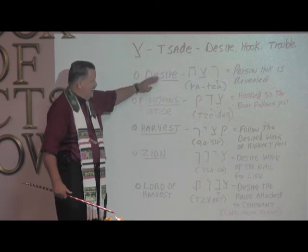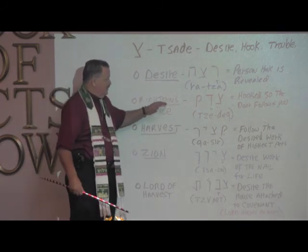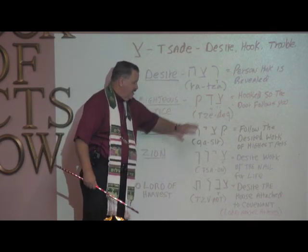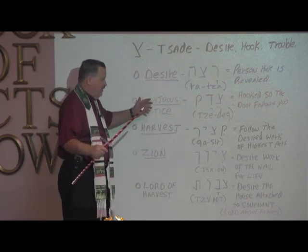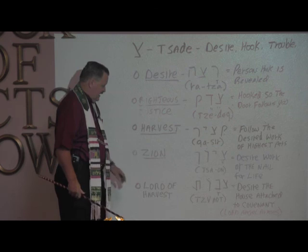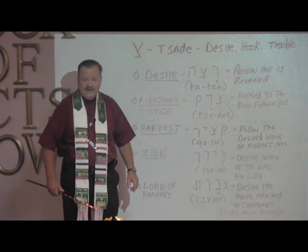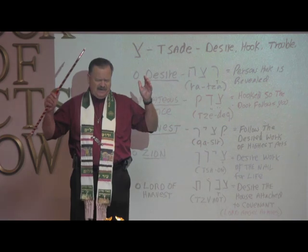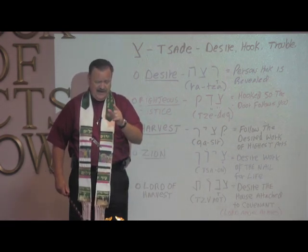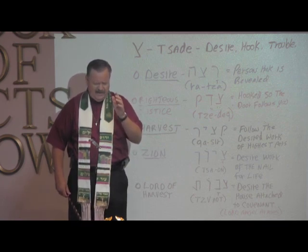Father, we give thanks for your great plan — the desire of all ages — that our desire will be revealed because we'll live for the return of Christ. Righteousness will follow us because we live in covenant at our door and in our hearts. The harvest will go forth as we desire the highest person and seek him in Zion. Thank you for blessing us with this revelation of Tsadi and what it means applied in our life. We can see you revealed in us because our desire will be seen — that we seek to serve you above all else. We ask all of these things in Yeshua's name. Amen.